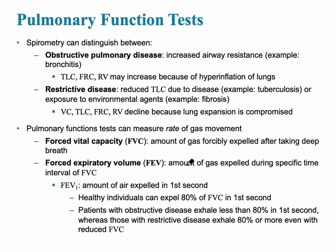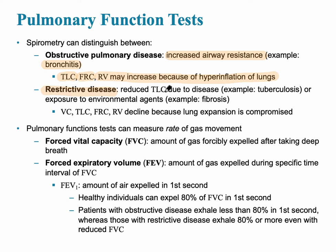This slide shows pulmonary function tests, done to determine whether the patient has an obstructive pulmonary disease — where something is increasing airway resistance, making it more difficult for air to reach the alveoli. An example would be bronchitis. In this case, the total lung capacity, functional residual capacity, and residual volume may increase because of hyperinflation of the lungs trying to overcome that airway resistance.